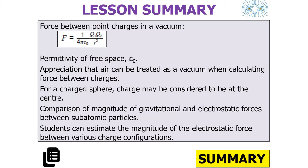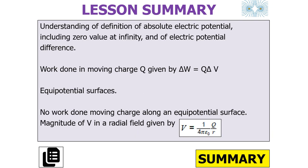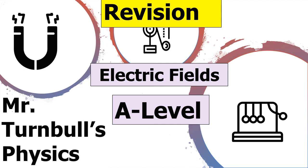To summarise: we should understand Coulomb's law and the assumption of a vacuum between charged objects, and be able to compare gravitational and electrostatic forces between subatomic particles. We can represent electrical fields with field lines and understand electrical field strength equations. We can describe the parabolic trajectory of moving charged particles in a uniform field at right angles. We understand absolute electrical potential, equipotential surfaces, and that no work is done moving a charge along an equipotential surface. We know the graphical representations of E and V with r, where the gradient of V against r gives E and the area under E against r gives potential difference.